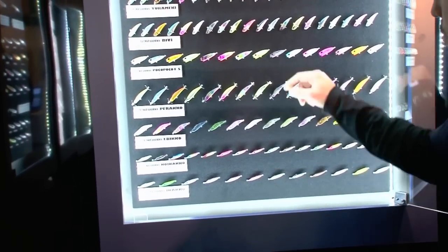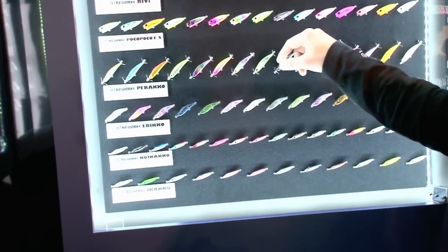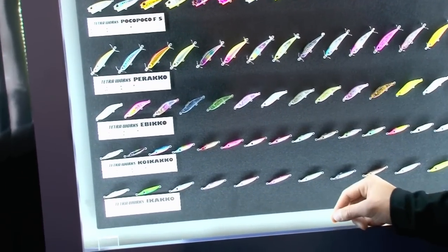Here we have the Perakko, it's a prop, it's a straight action. This prop goes around attracting small fish.